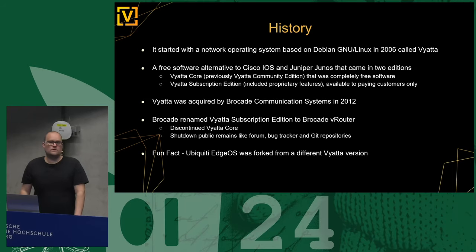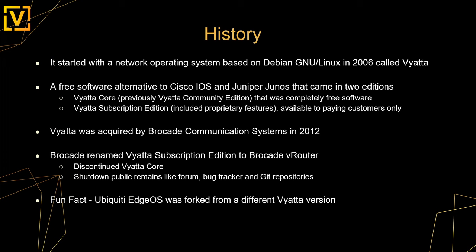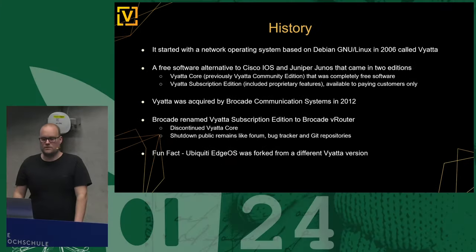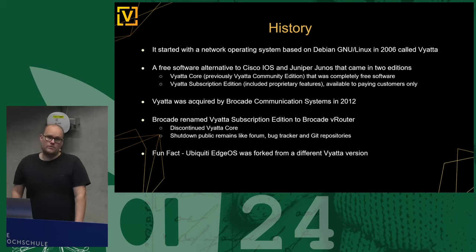Everything started in 2006 with a product called Vyatta — a free software alternative to Cisco IOS, Juniper JunOS, or any other commercial network operating system. Vyatta was available in two versions: Vyatta Core, an open source community-driven version, and a subscription version with proprietary features like data plane acceleration, which would now be done using eBPF, available only to paying customers.